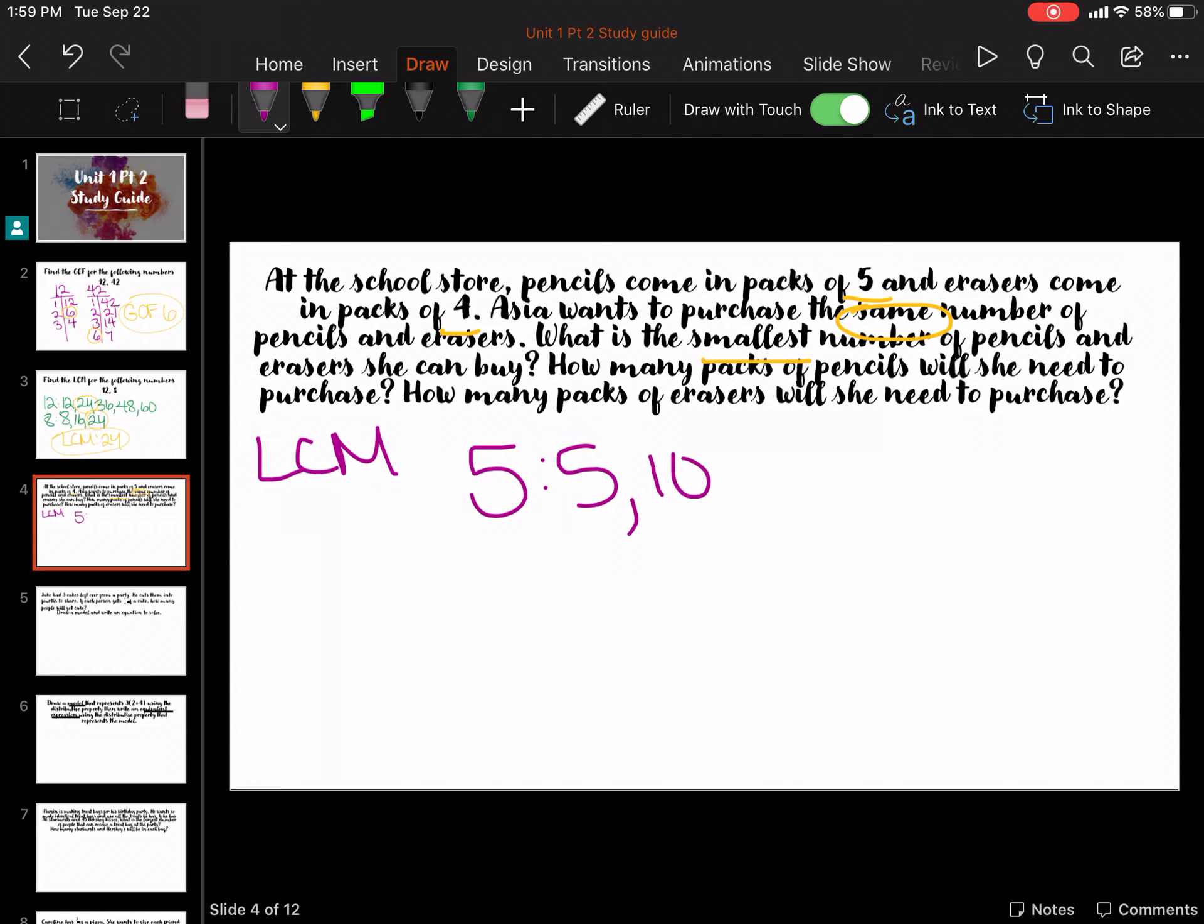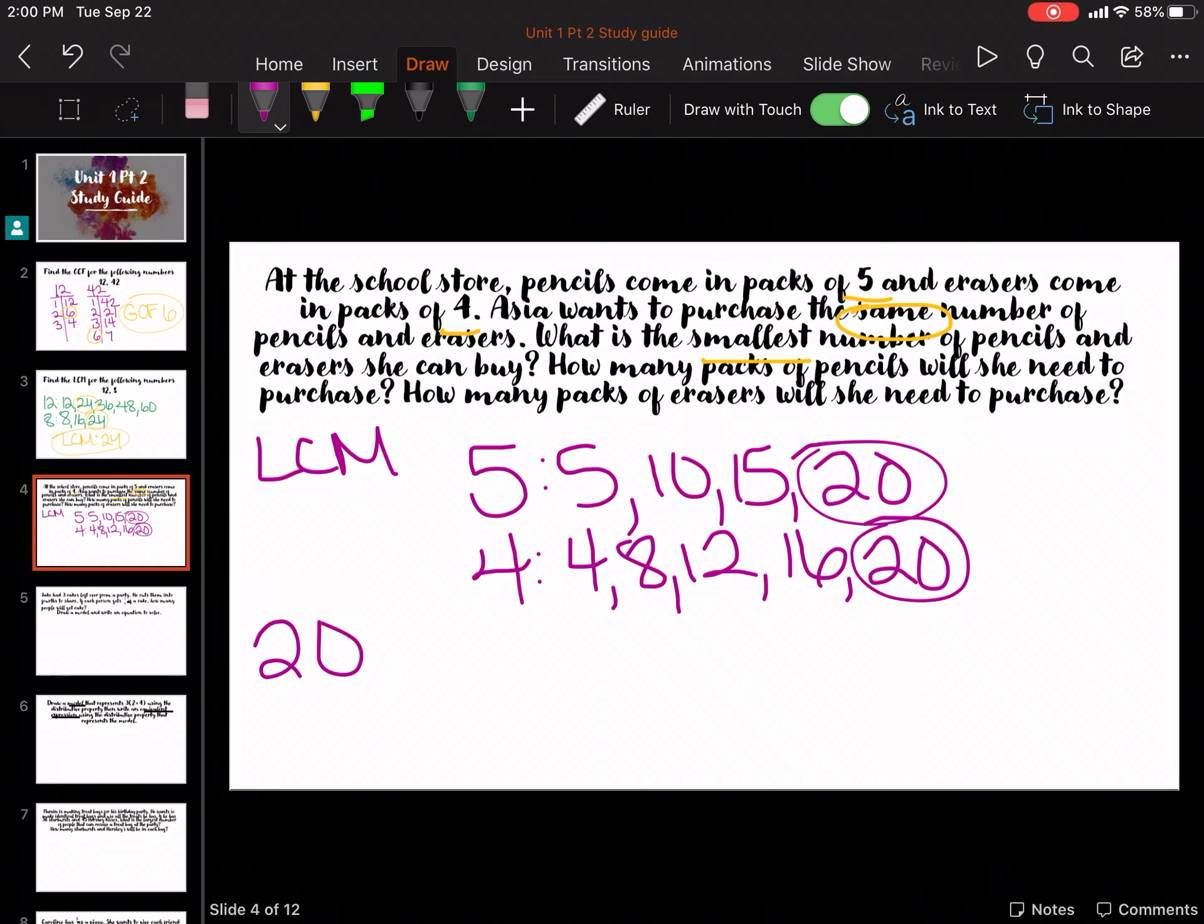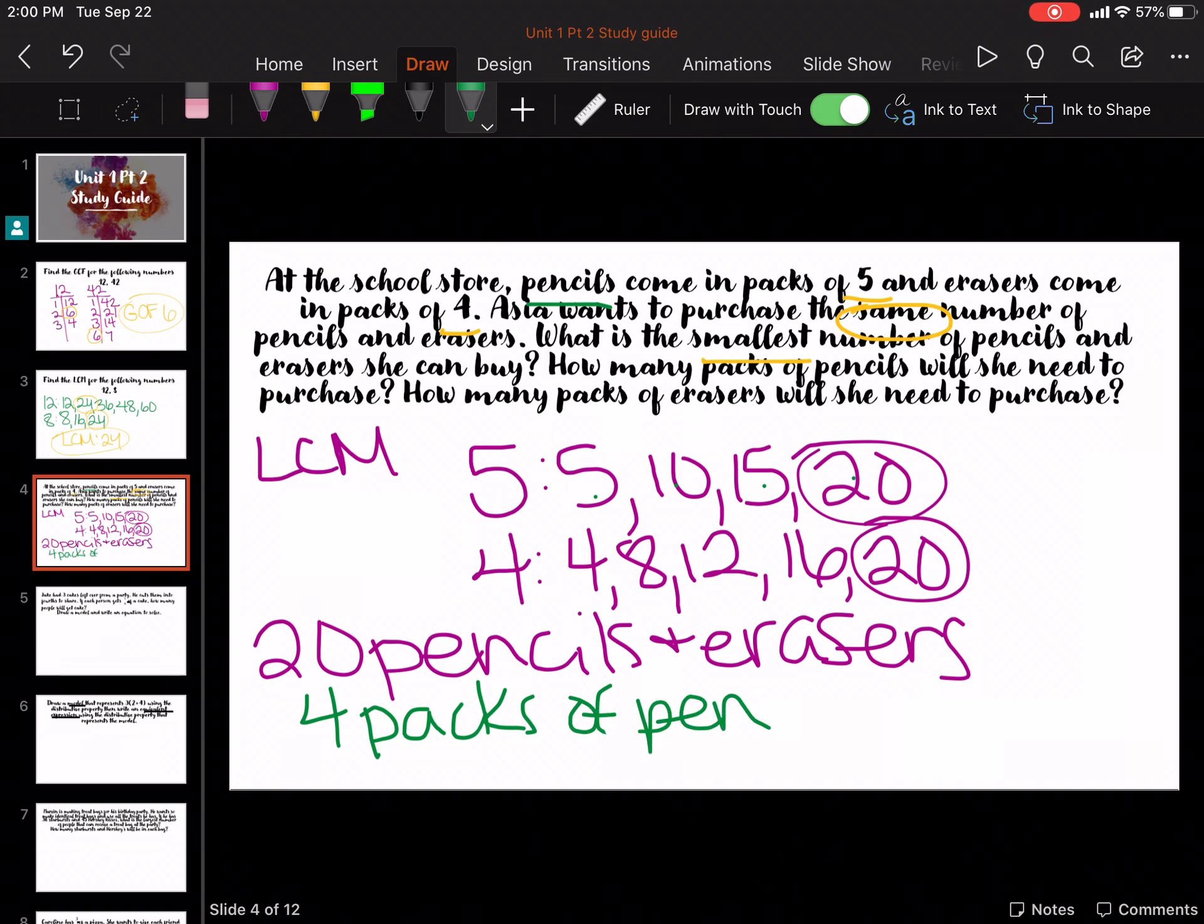5, 10, 15, 20. And then 4 is 4, 8, 12, 16, 20. LCM is 20, so it's 20 pencils and erasers. That's total. You want 20 total erasers and 20 total pencils. So let's calculate how many packs we need. So if the pencils come in packs of 5, we need 1, 2, 3, 4 packs of pencils. And then packs of 4, 1, 2, 3, 4, 5 packs of erasers.